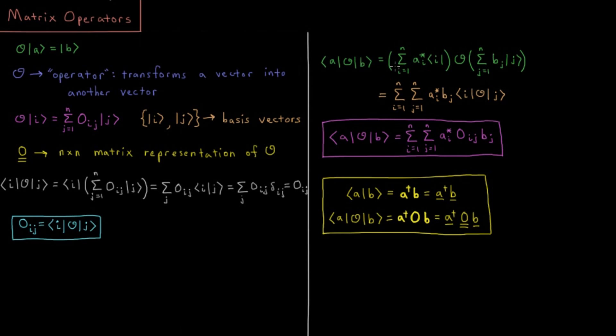In that case, we could do a sum from i equals 1 to n. Bra vector A would be complex conjugate of element ai times bra basis vector i. Then the operator O acting on ket vector b is a sum from j equals 1 to n of b sub j, coefficient j of vector b, multiplied by ket basis vector j.